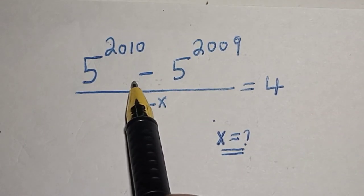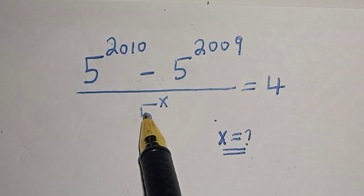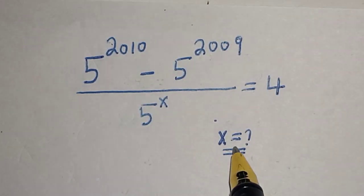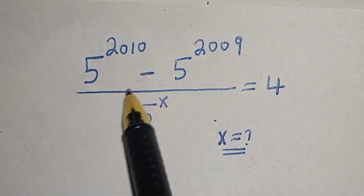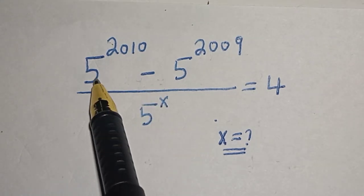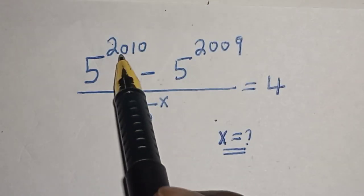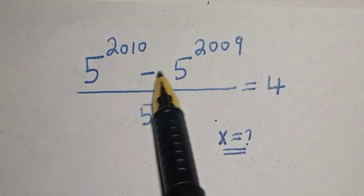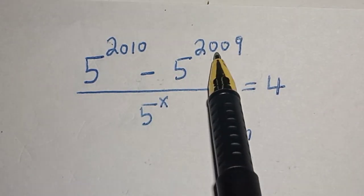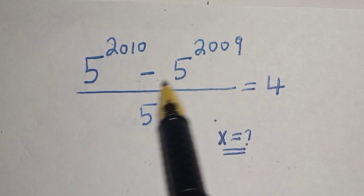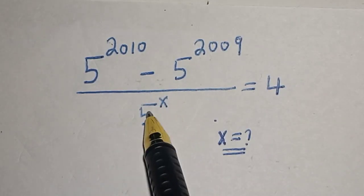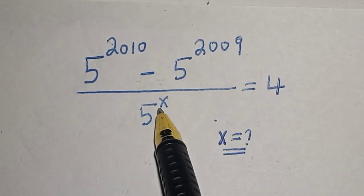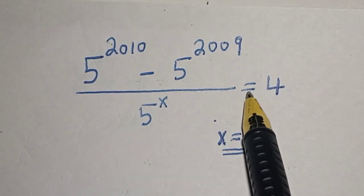Hello, welcome to Math Gist. In this class we want to find the value of s from this equation: 5 raised to power 2010 minus 5 raised to power 2009, divided by 5 raised to power s, is equal to 4.